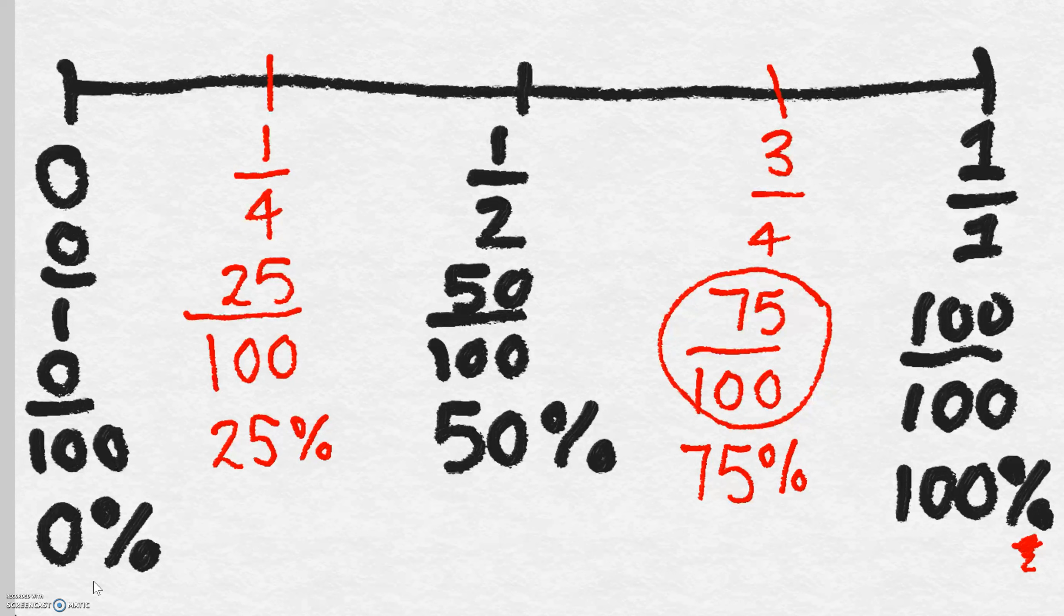Here, three quarters or 75 over 100 - it is likely or more than likely to occur. It is not certain as it is for 100 percent, but it is likely. A quarter over here, or 25 percent, is close to the impossible. It's actually halfway between the impossible and 50-50. So we could probably say these events here are unlikely to occur.